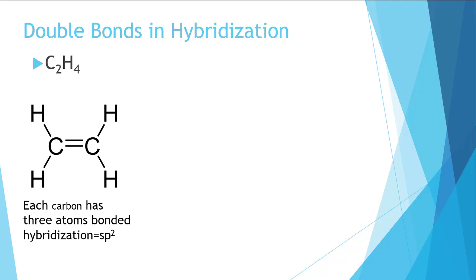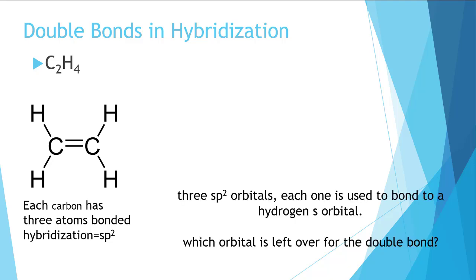Now take a moment and pause if you need to to determine the hybridization on each carbon atom. In both cases, carbon has three bonded atoms and no lone pairs. This means that it needs to have three hybrid orbitals, which leaves us with sp2 hybridization for both of the carbon atoms.